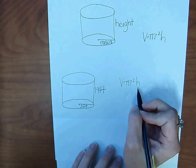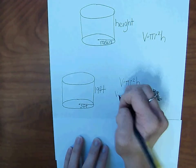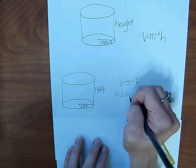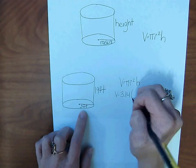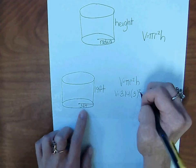So volume equals 3.14 times, we do have the radius here, so 3 squared times the height, 19.